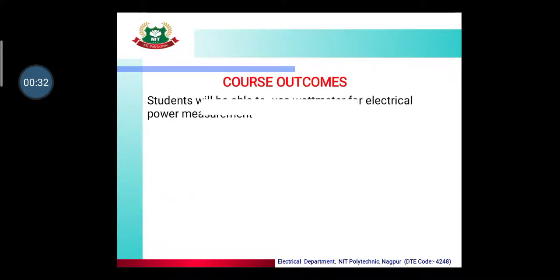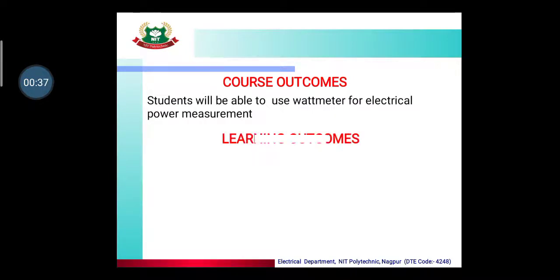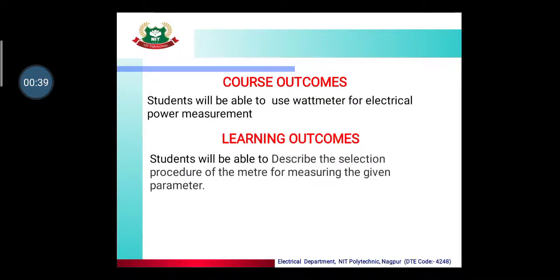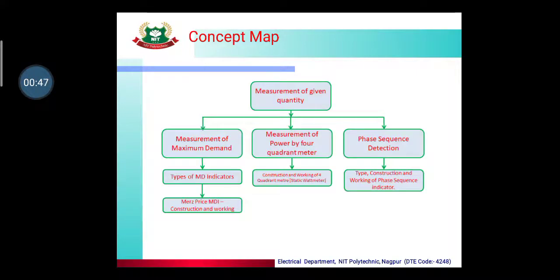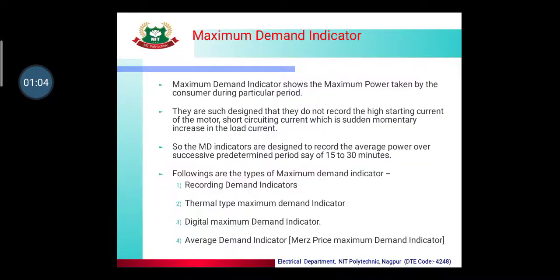The course outcomes are: students will be able to use a watt meter for electrical power measurement. The learning outcomes are: students will be able to describe the selection procedure of the meter for measuring given parameters. The concept map covers: measurement of maximum demand using a maximum demand indicator, measurement of power by a four quadrant meter, and phase sequence detection.